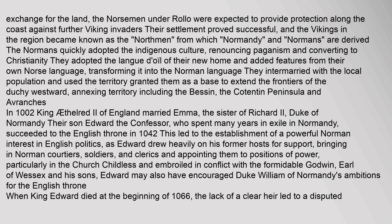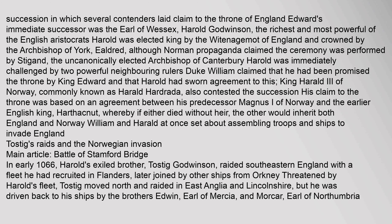Edward drew heavily on his former hosts for support, bringing in Norman courtiers, soldiers, and clerics and appointing them to positions of power, particularly in the church. Childless and embroiled in conflict with the formidable Godwin, Earl of Wessex and his sons, Edward may also have encouraged Duke William of Normandy's ambitions for the English throne. When King Edward died at the beginning of 1066, the lack of a clear heir led to a disputed succession in which several contenders laid claim to the throne of England.